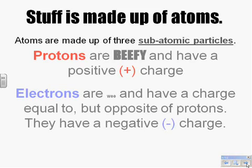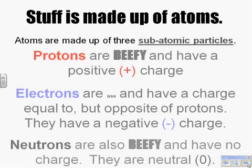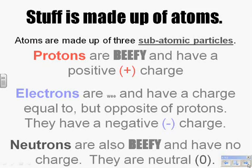Electrons are much, much, much less massive than protons are, and they have a negative charge. The third subatomic particle we need to talk about are neutrons. Neutrons are just as beefy as protons — in fact, just a fuzz heavier — and they have no charge. Their name implies that: neutron means neutral.